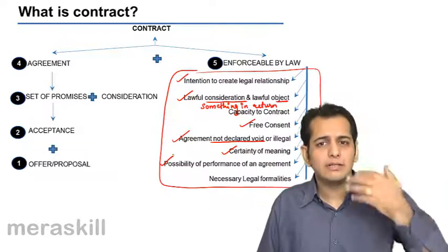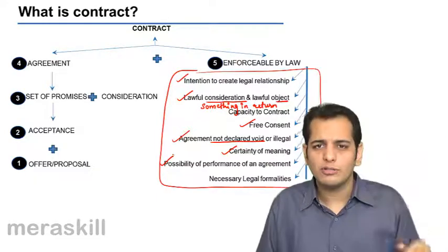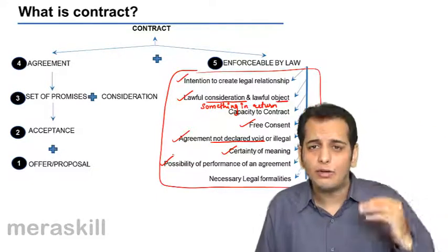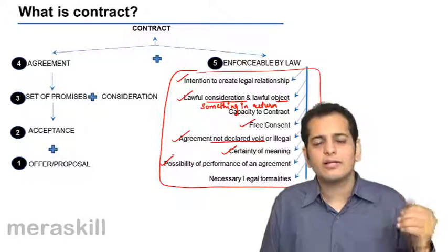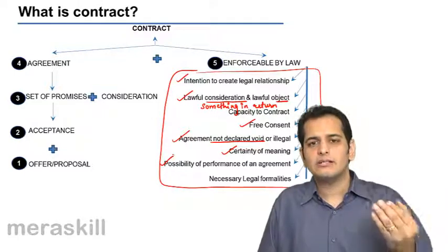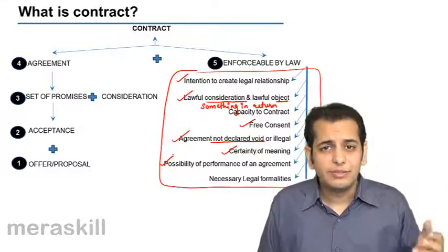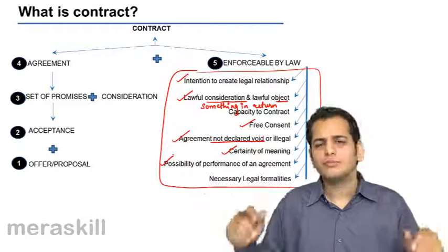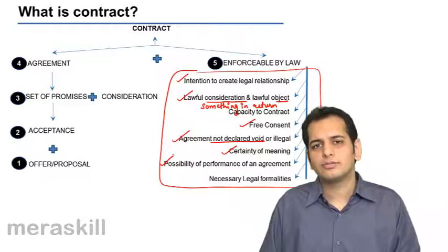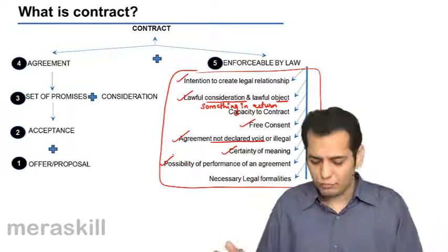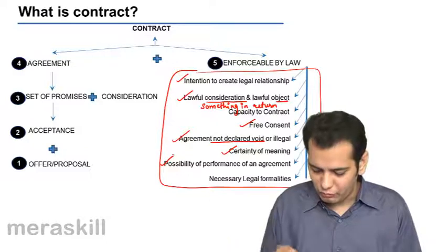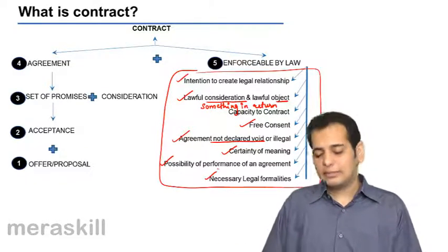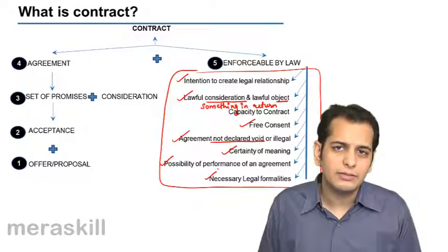Contracts which are possible to perform will get enforceability — contracts such as supply of cotton, selling of a car, or selling of vegetables and fruits. These are very much possible contracts and they will get the enforceability of law.